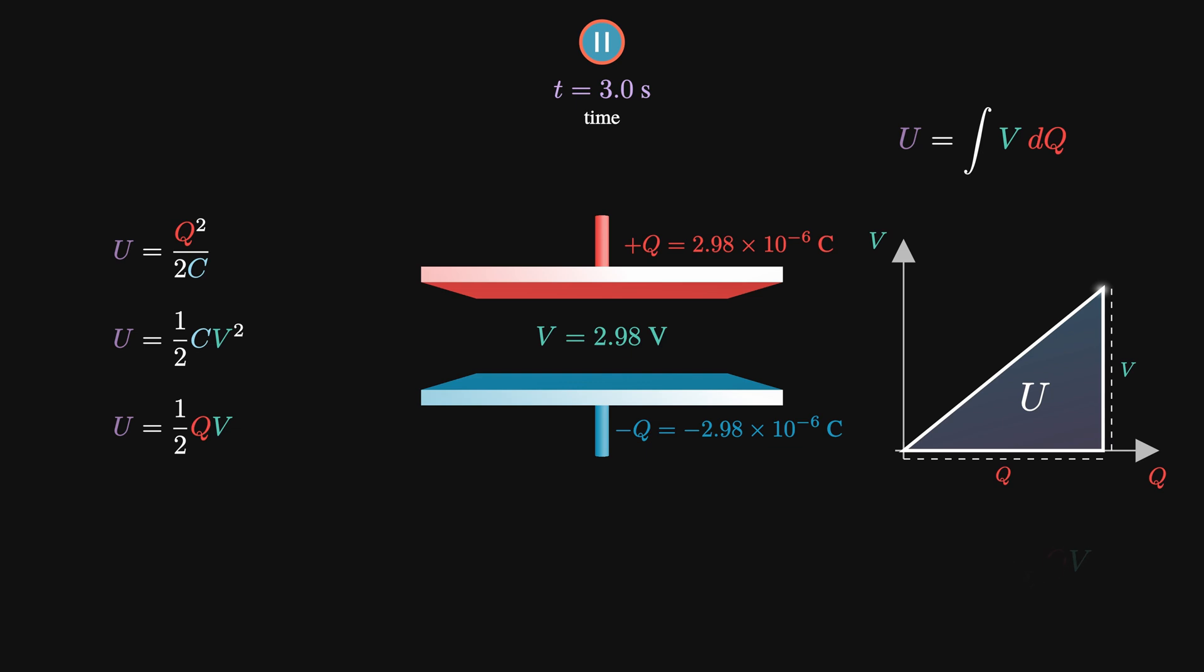We can also see how the energy stored in the capacitor varies depending on the capacitance. If we increase the capacitance, the gradient decreases, and if we decrease it, it increases. So, for the same amount of charge in our plates, we can see that the area increases and decreases accordingly.